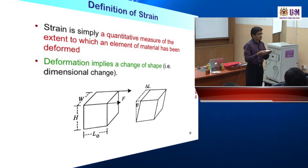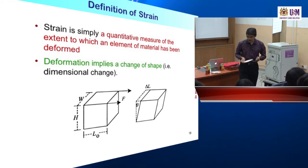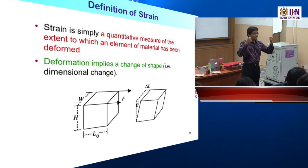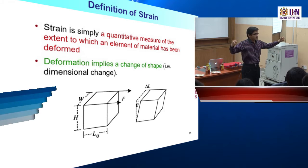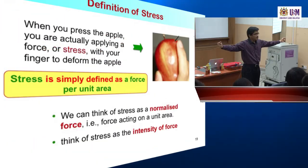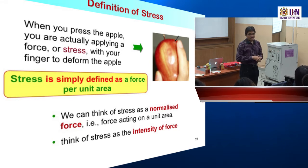When we release the force, if the material is flexible enough, it will come back to the original shape — if you apply the force within the elastic limit. Just like a rubber band: you stretch it and release it and it comes back to the original shape. But if you stretch it more and more beyond the elastic limit and then release it, it won't come back to the original shape.